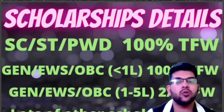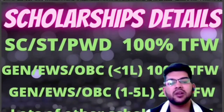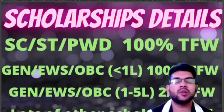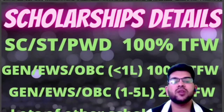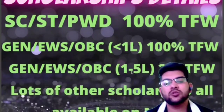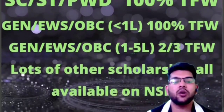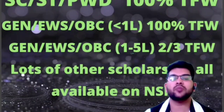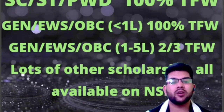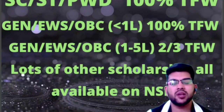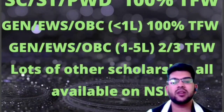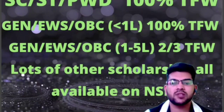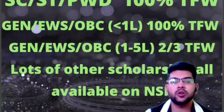For General, OBC, and EWS candidates with family income between ₹1 lakh and ₹5 lakh, you will have the two-thirds TFW scheme — that is, 66% of your tuition fee will be waived off. There are also many scholarships available on the National Scholarship Portal (NSP). If you are from a reserved category, you will have lots of scholarships, and OBC and EWS candidates also have scholarships provided by central and state governments. Once you join the college, you can apply there.